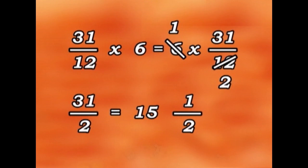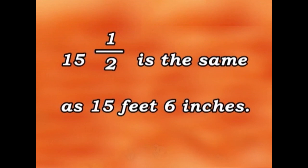Thirty-one over two equals fifteen and a half. Fifteen and a half is the same as fifteen feet six inches.